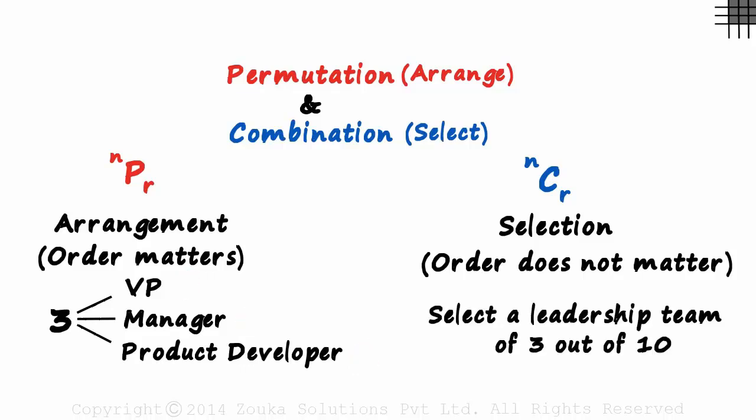On the other hand, if we are asked to select a leadership team of 3 out of 10 and told nothing else about it, then it is a case of a combination. The order does not matter. Selecting A, B and C is the same as selecting B, C and A or C, A and B.